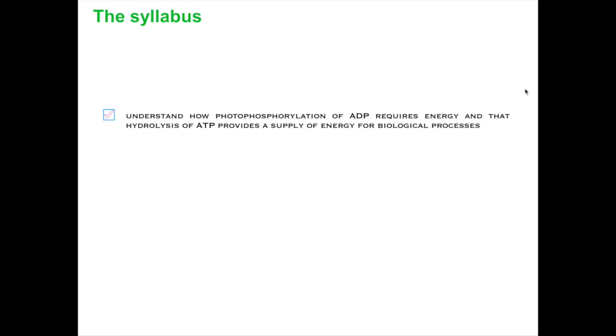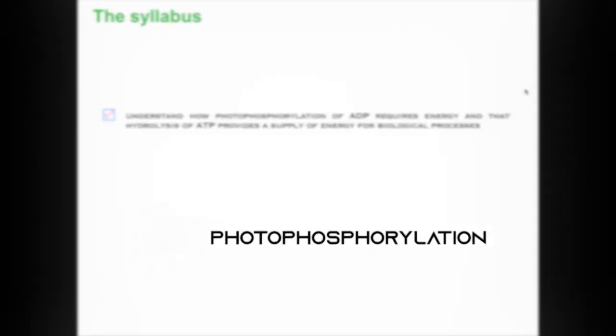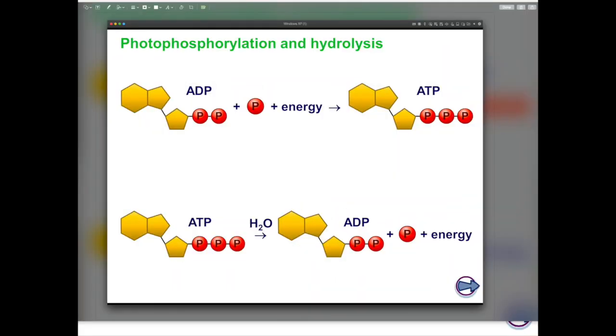This is the second part of the syllabus that we're going to go over. In this part, we're going to look at a process known as photophosphorylation. Photophosphorylation involves the use of light, photo part of the word, to phosphorylate a molecule of ADP.